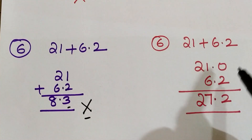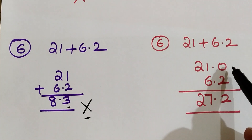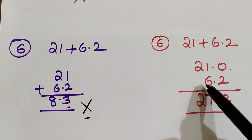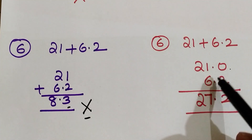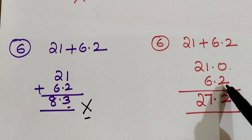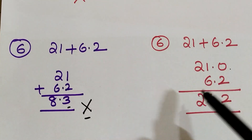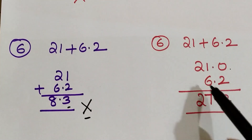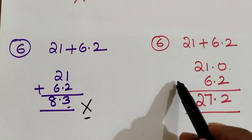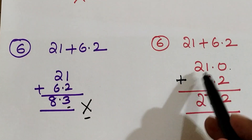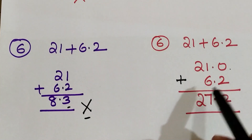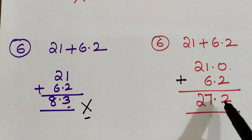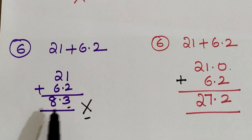The correct procedure: 21 should be expressed as 21.0, because any natural number has 0 as its decimal part. Then align 6.2 so the decimal points match — ones place, decimal place, and tens place. 0 plus 2 is 2, 1 plus 6 is 7, and 2 we write as it is. So 21.0 added with 6.2 is 27.2, not 8.3.